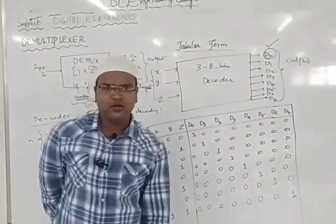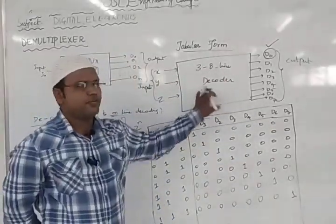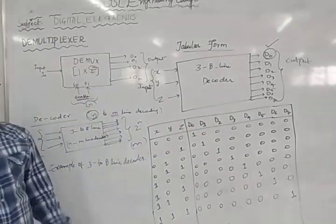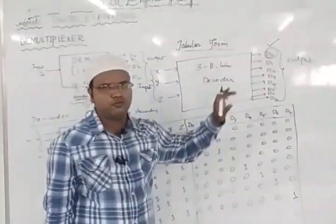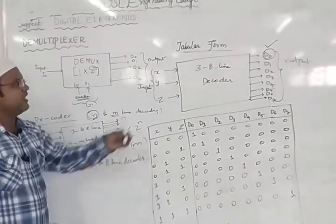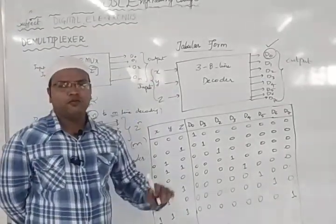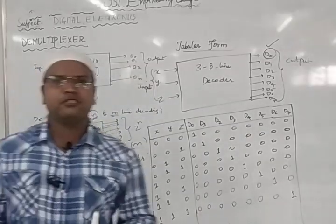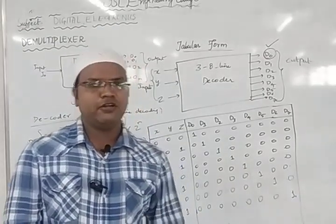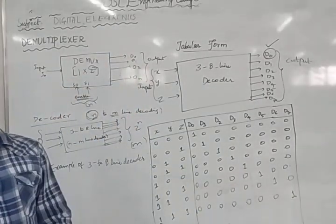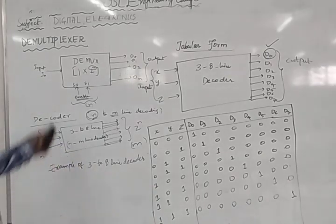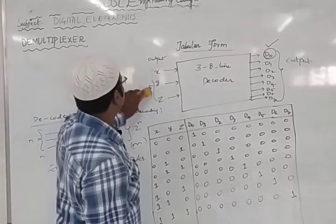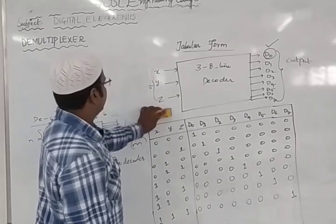Similarly we can design a 2-to-4 line decoder with 2 inputs and 4 outputs. The design process is: first write the truth table, then write the tabular form, and finally implement using basic logic gates — NOT gates and AND gates. Students should note down the truth table before proceeding to the gate-level design.